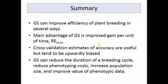In summary, genomic selection can improve the efficiency of plant breeding in several ways. The main advantage is improved gain per unit of time. Cross-validation estimates of accuracy are useful but they do tend to be upwardly biased, and we'll talk about that in Module 4. Genomic selection can reduce the duration of the breeding cycle, reduce phenotyping costs, increase your population size going into testing, and improve the value of your phenotypic data.